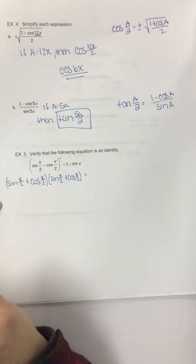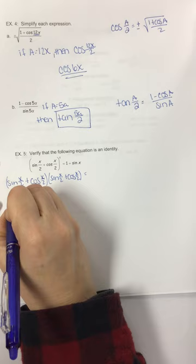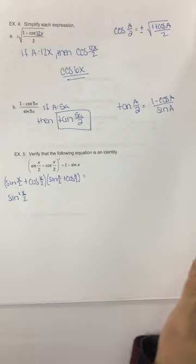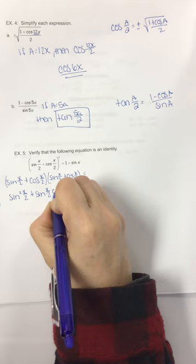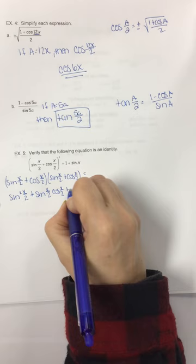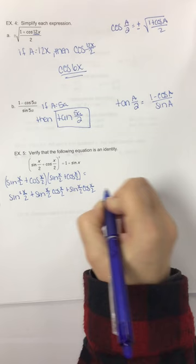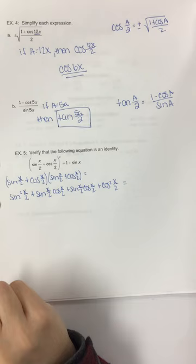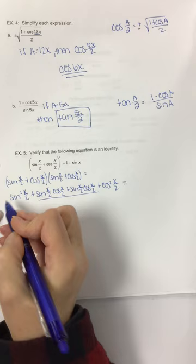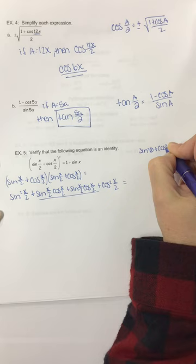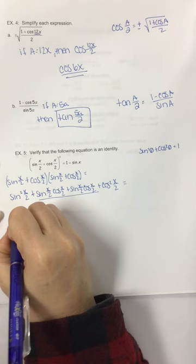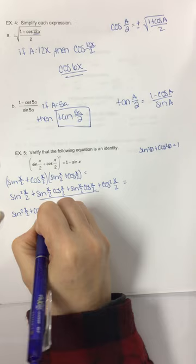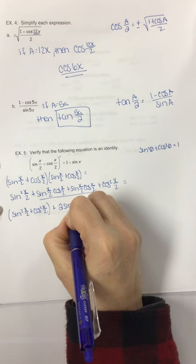Expanding: sine of x/2 plus cosine of x/2, times sine of x/2 plus cosine of x/2. FOIL gives: sine squared x/2, plus sine x/2 cosine x/2, plus cosine x/2 sine x/2, plus cosine squared x/2. Combining like terms and reordering: sine squared x/2 plus cosine squared x/2, plus 2 sine x/2 cosine x/2.